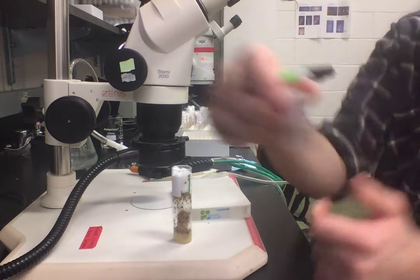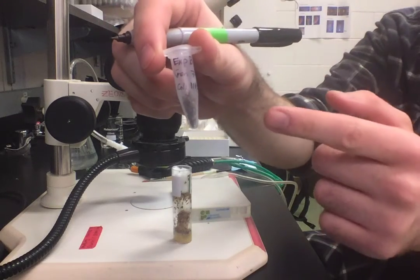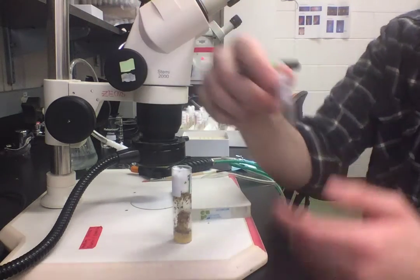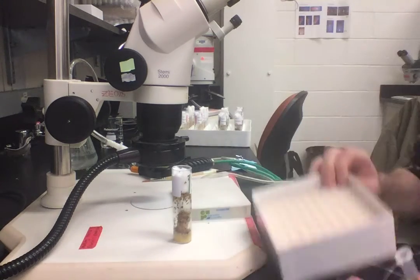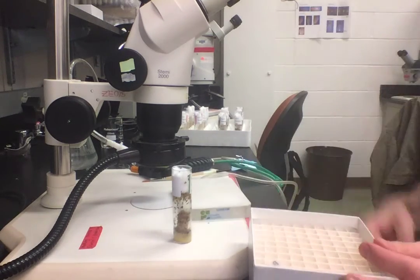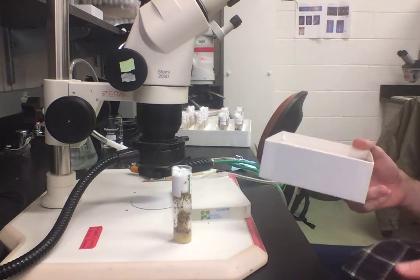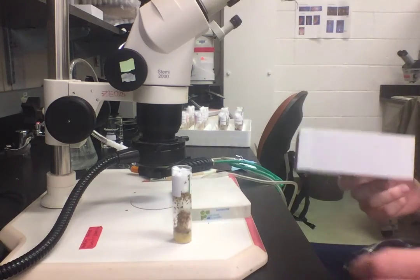I've got on my vial the treatment, the generation of the flies, and the date that I collected them on. Then I'm going to take one of these white cardboard freezer boxes and put all of my vials in here. Then I'm going to put this whole box into the negative 80 once I've collected all my flies.